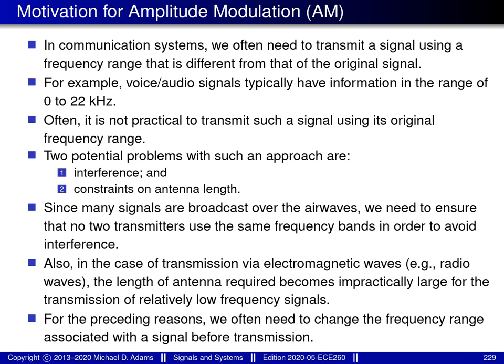If we had a means to shift the spectrum of a signal to a different frequency range prior to transmission, and then undo this shifting upon reception, this would address both interference and antenna length issues. By choosing a transmission frequency range that doesn't overlap with other users, interference can be avoided. Moreover, by using sufficiently high frequencies, extremely large wavelengths can be avoided. One way to accomplish this goal is with amplitude modulation, which is the main focus of the material that follows.